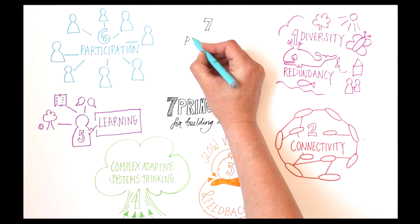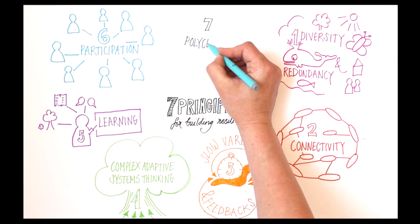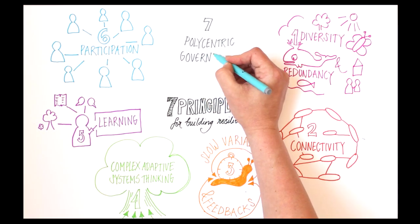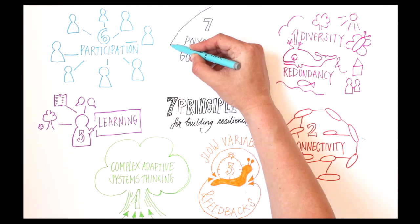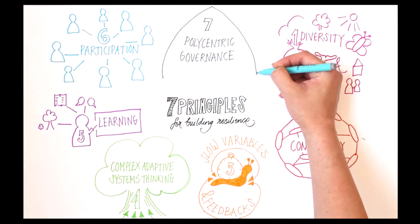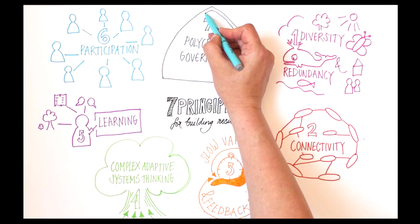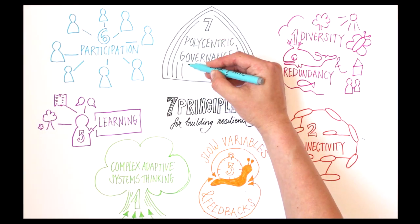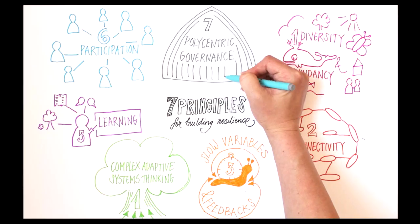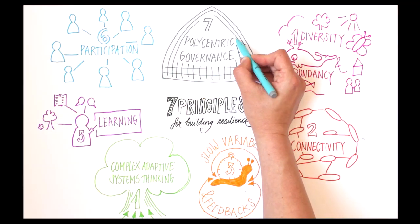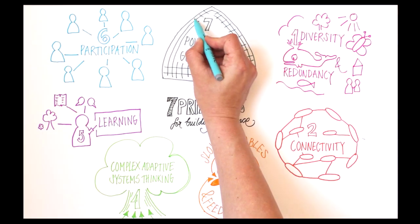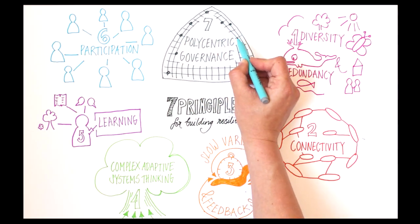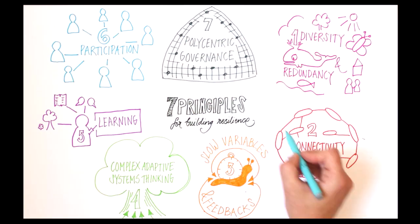Principle 7: Promote polycentric governance. Polycentricity, a governance system in which multiple governing bodies interact, can help support collective action in times of change. But it is also vulnerable to tensions between actors and institutions. Involving a wide range of stakeholders means striking a balance between openness and mandates for decision-making.